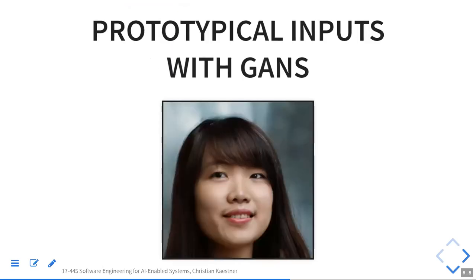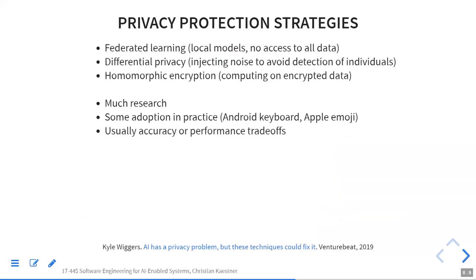What we're doing this way is generating fake things that look somewhat similar to the training data — prototypical inputs. They're not really training data, but we're leaking characteristics and can imitate real things. For privacy, there are a couple of protection strategies — this is an area with a ton of research, mostly close to the model level — like generative adversarial networks, there's a huge amount of research on how to make inversion attacks harder and avoid leaking.